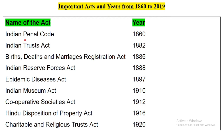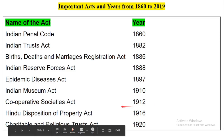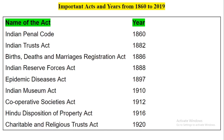First, Indian Penal Code came in the year 1860. Indian Trust Act was passed in 1882. Birth, Deaths and Marriage Registration Act was passed in 1886. Indian Reserve Forest Act was passed in 1888. Epidemic Disease Act was passed in 1897. Indian Museum Act was passed in 1910. Cooperative Societies Act was passed in 1912. Hindu Disposition of Property Act was passed in 1916. Charitable and Religious Trust Act was passed in 1920.